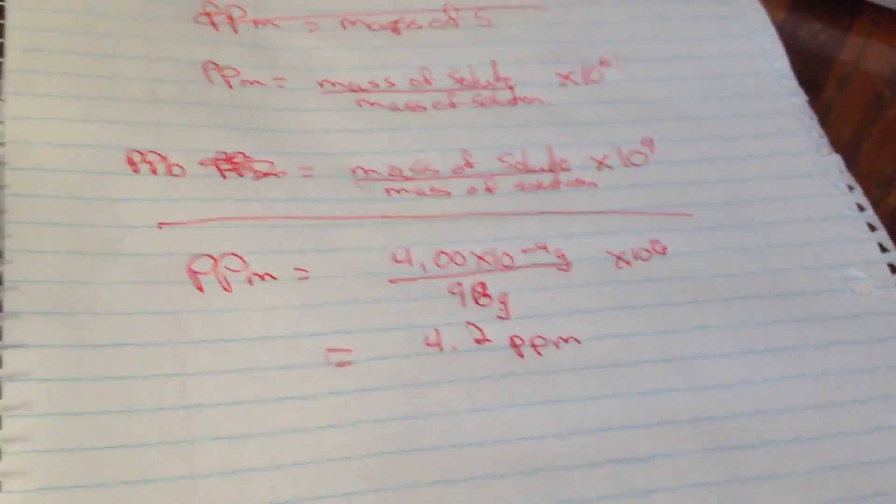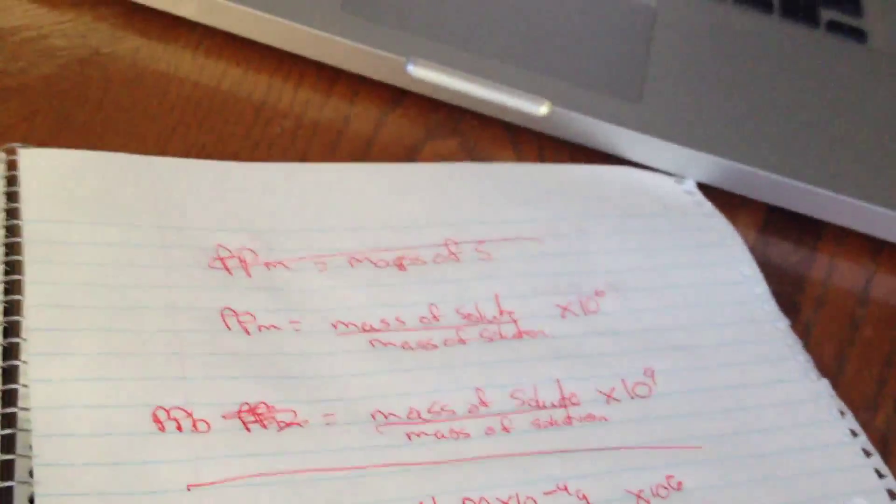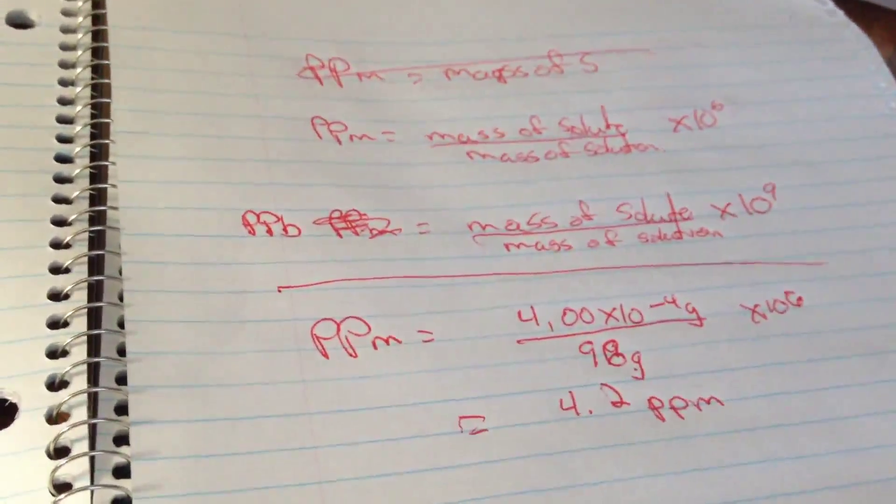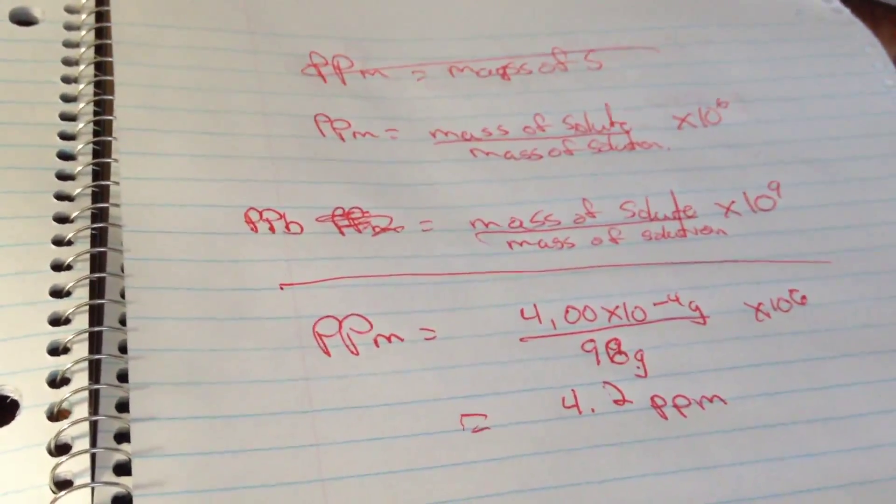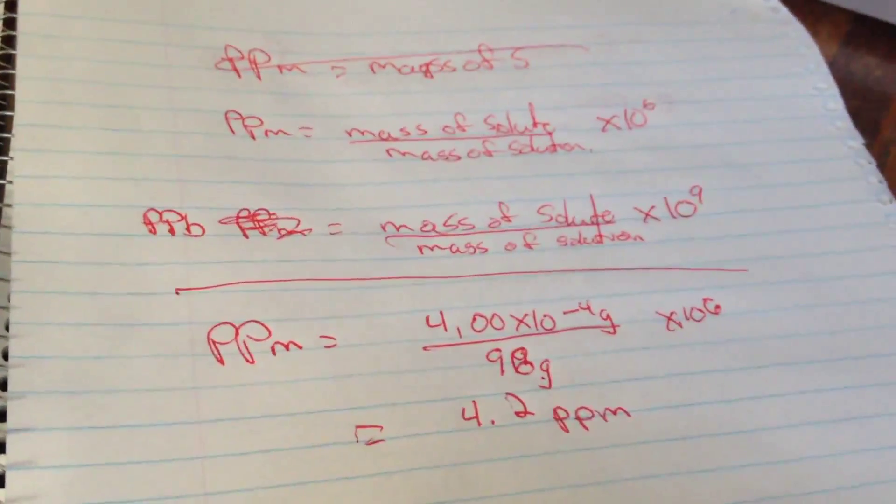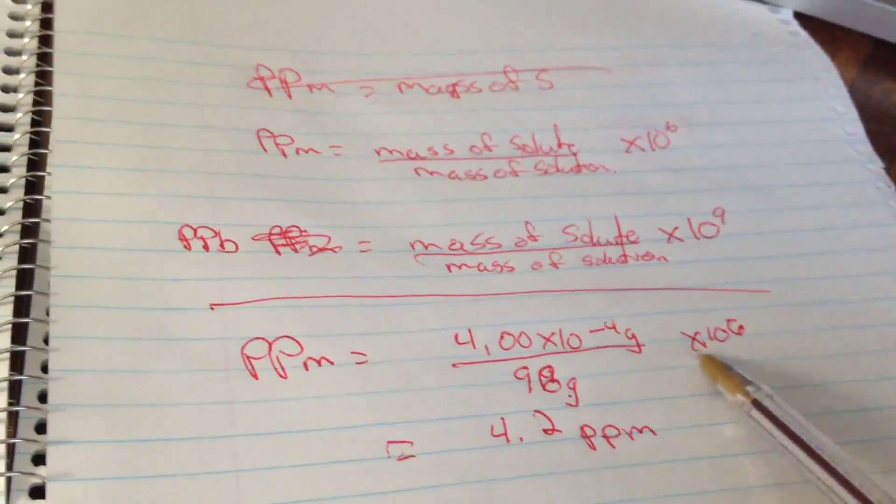4.2 parts per million. Okay, remember my sig figs. There's only 2 in 96, so that's what my answer has to have. And if I wanted to do parts per billion, I would do the same thing but I would have made that 10 to the 9.